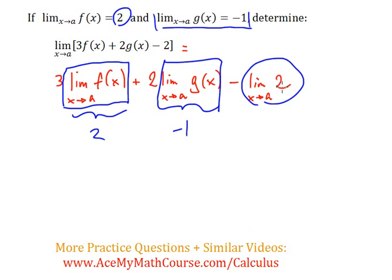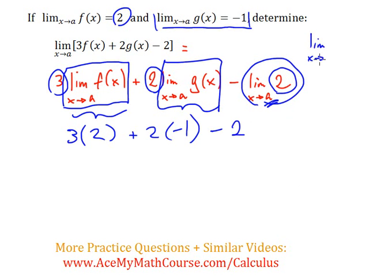And last but not least, we got limit as x approaches a of 2. Take a guess for what that's going to be. The limit as x approaches a of a constant 2 is just going to be 2. Every time we have the limit as x approaches something of a constant, we're just going to get the constant.